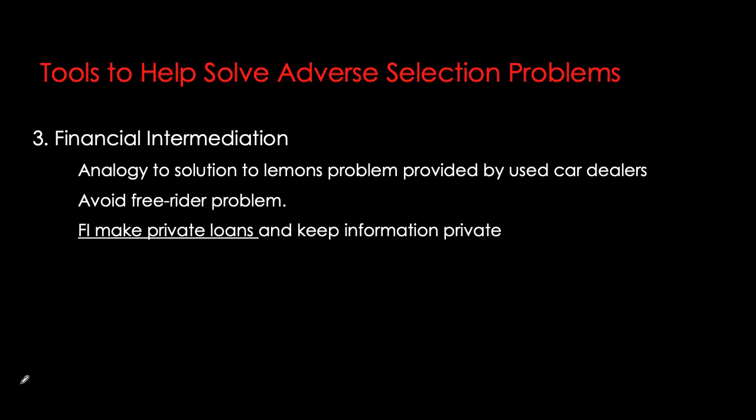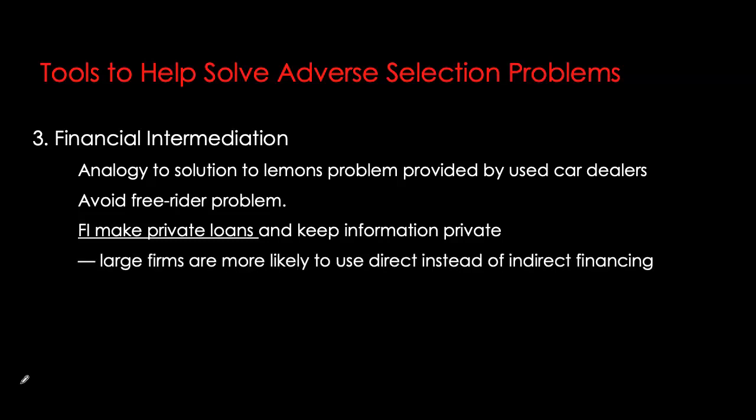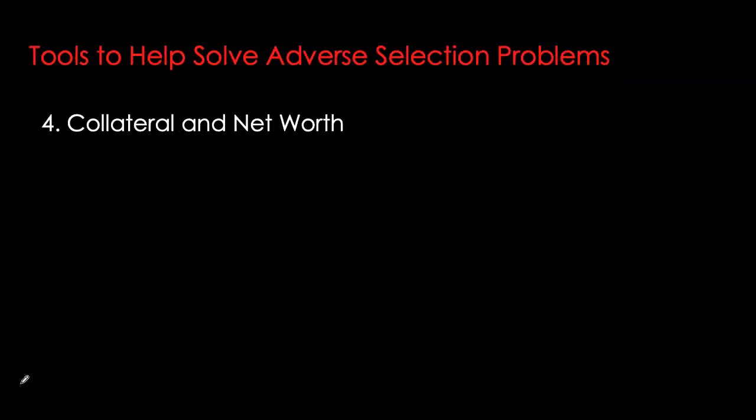Financial institutions are able to earn a higher return than the interest they pay to their depositors. They avoid free riding because the loans they make are always private loans, retaining the profits from the production of that information. This analysis explains why financial institutions are such an important source of external financing. It also explains why large corporations are most likely to obtain funds from direct financing — through securities markets — because the larger the company, the more well known it is, the more information is available, and the easier it is for investors to assess its quality.